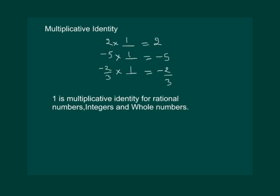Let us now try to find the multiplicative identity. If I ask you what should be multiplied with 2 so that we get 2, or with -5 to get -5, or -2/3 to get -2/3, surely your answer will be 1. So we can say that 1 is multiplicative identity for rational numbers, integers and whole numbers.